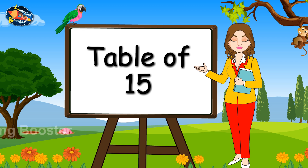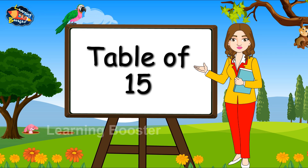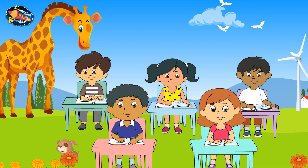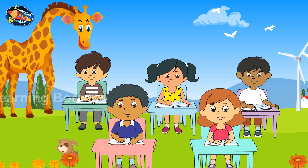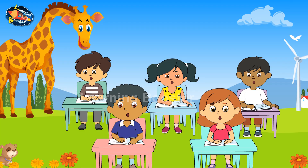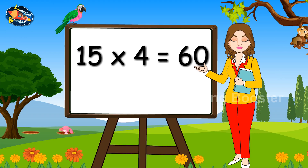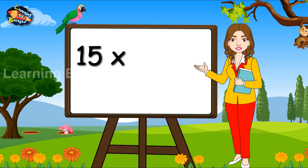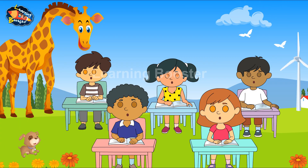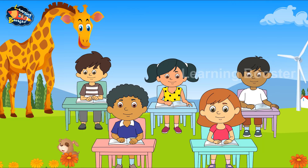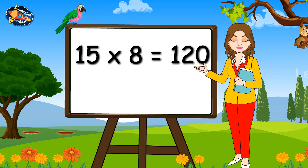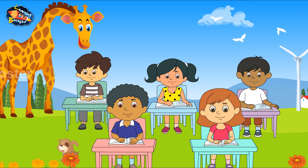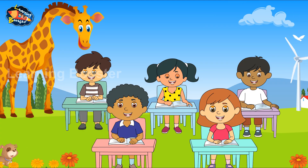Table of Fifteen. Fifteen ones are fifteen. Fifteen twos are thirty. Fifteen threes are forty-five. Fifteen fours are sixty. Fifteen fives are seventy-five. Fifteen sixes are ninety. Fifteen sevens are one hundred and five. Fifteen eights are one hundred and twenty. Fifteen nines are one hundred and thirty-five. Fifteen tens are one hundred and fifty.